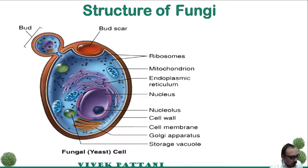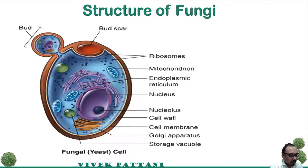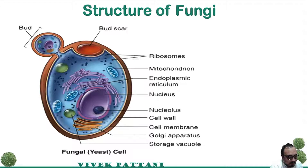The mycelium is a complex of several filaments called hyphae. New hyphae generally arise from spores which, on germination, put out germ tubes. These tubes elongate and branch to form hyphae. Each hypha is about 5 to 10 micrometers wide, compared to the bacterial cell which is usually around 1 micrometer in diameter.